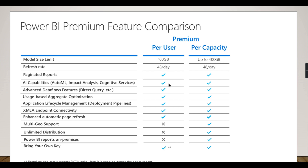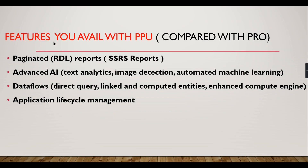Since this is meant for small and medium businesses, 100 GB is reasonable compared to the capacity option. The key question most people want to understand is: what is the difference between Pro and Premium Per User? The features available with Premium Per User that are not available for Pro users are: paginated reports, advanced AI, data flows, and application lifecycle management. I will cover all these topics in separate videos.